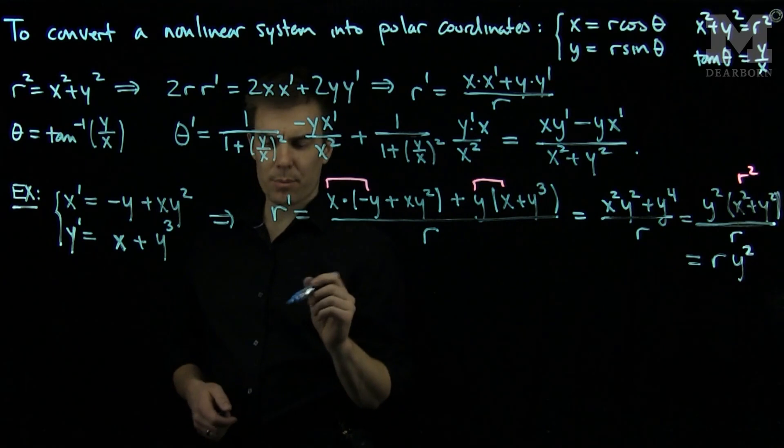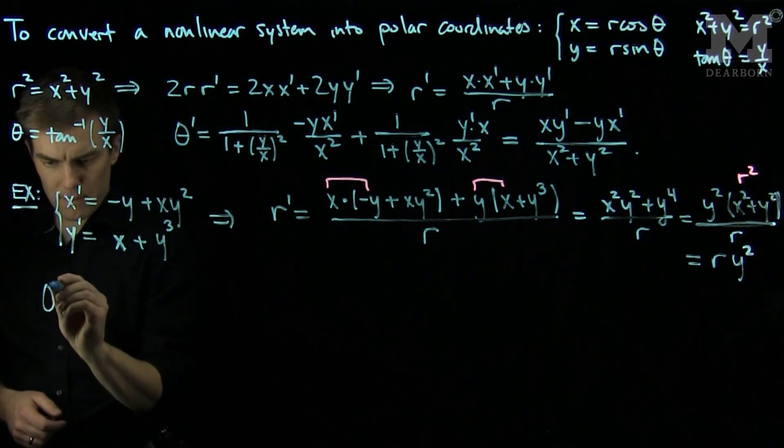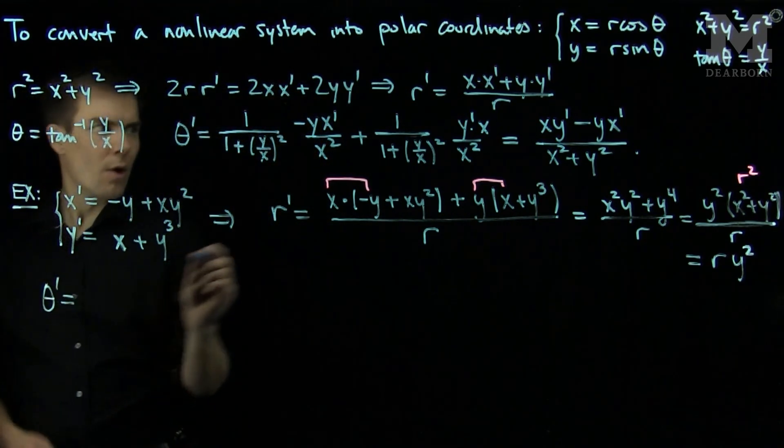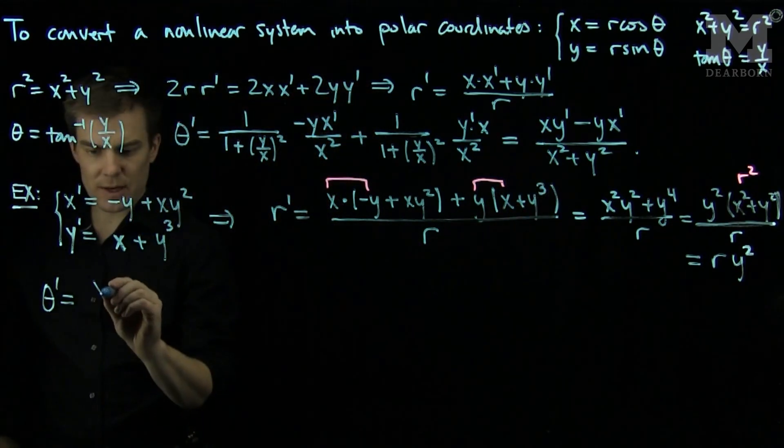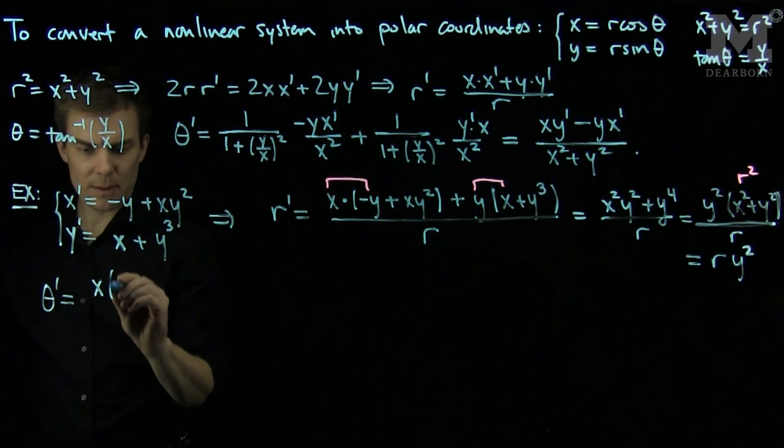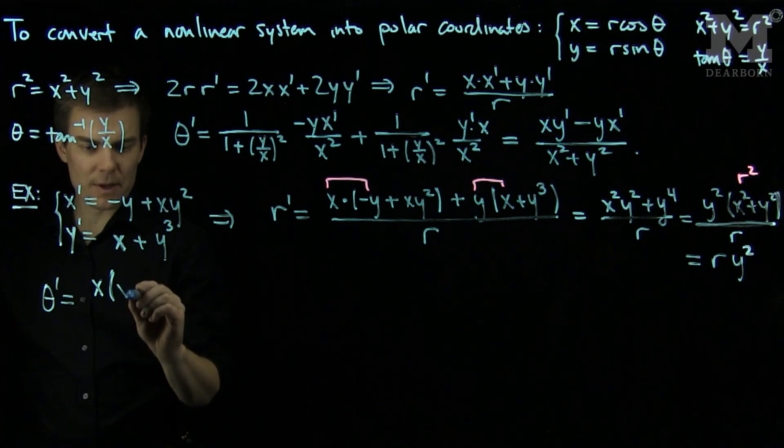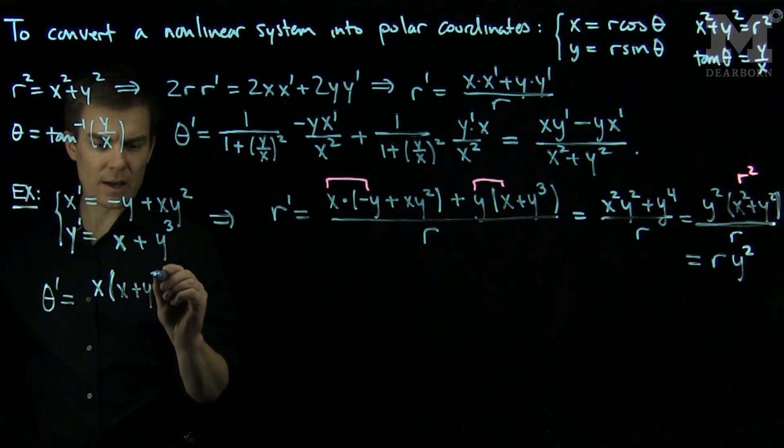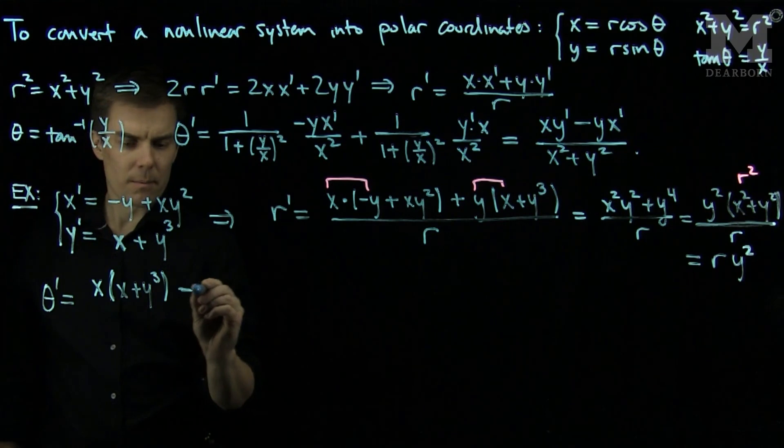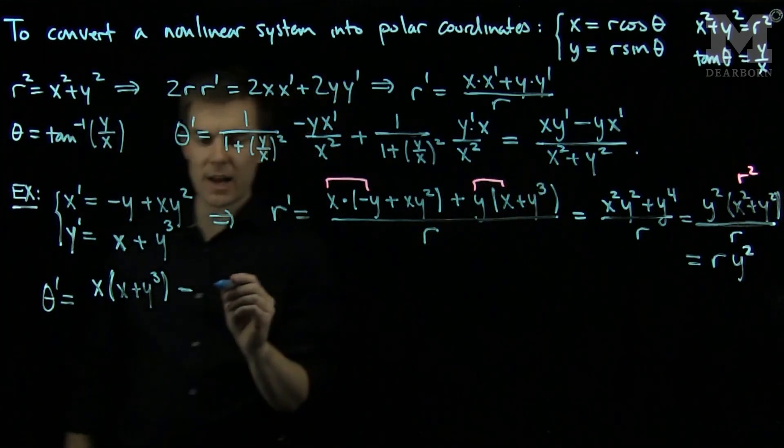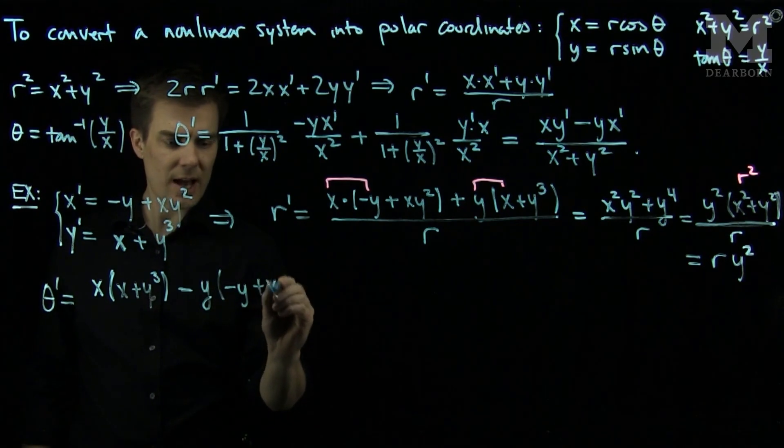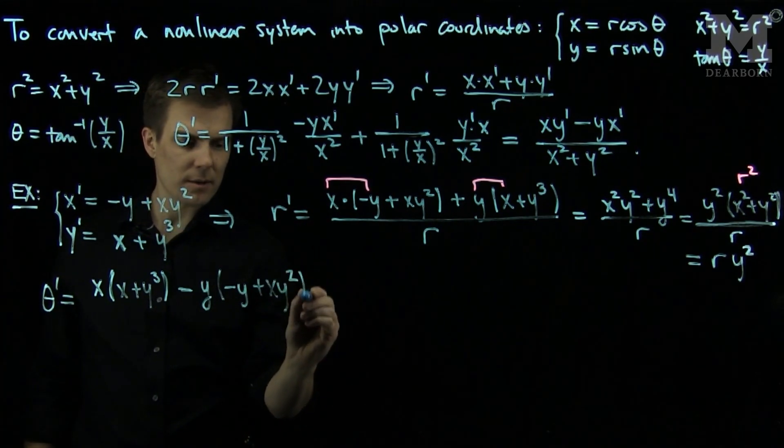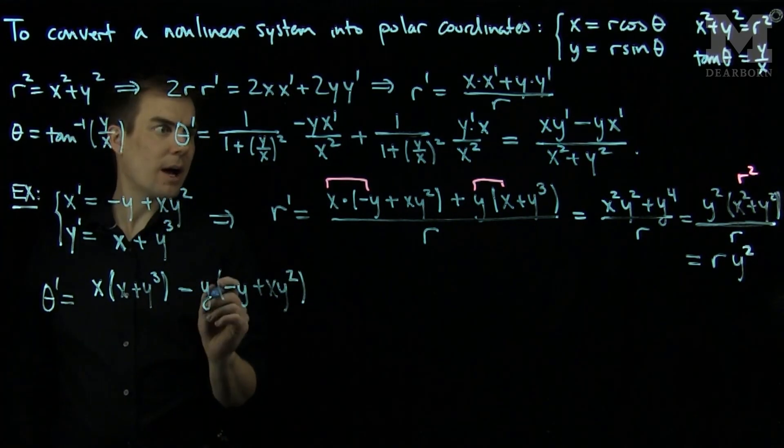Now, let's find theta prime. Theta prime will be x times y prime, which is x plus y cubed, minus y times x prime, which is negative y plus x y squared, all divided by r squared.